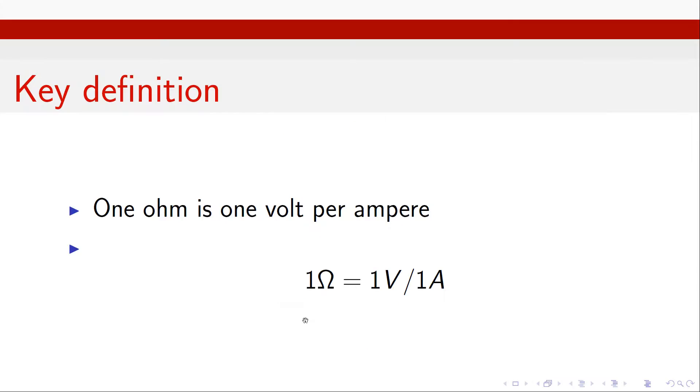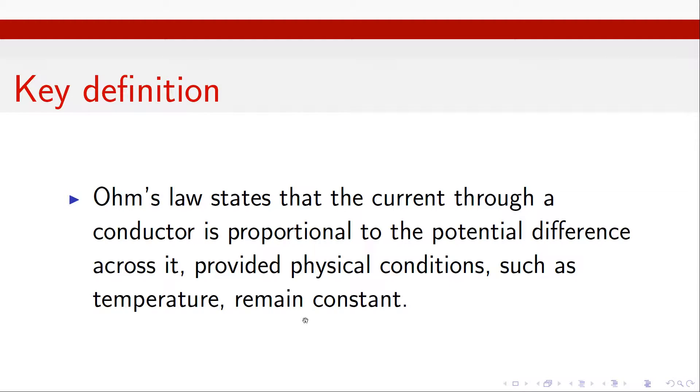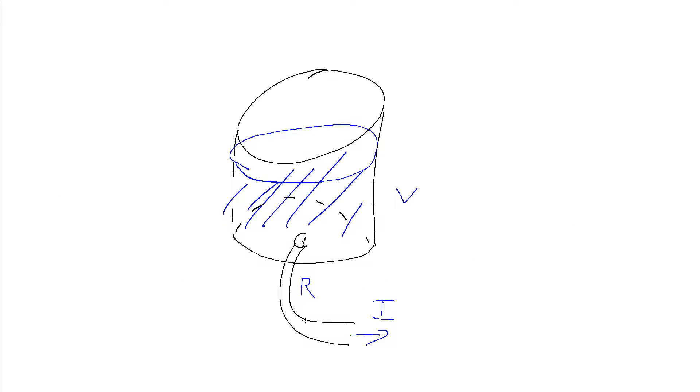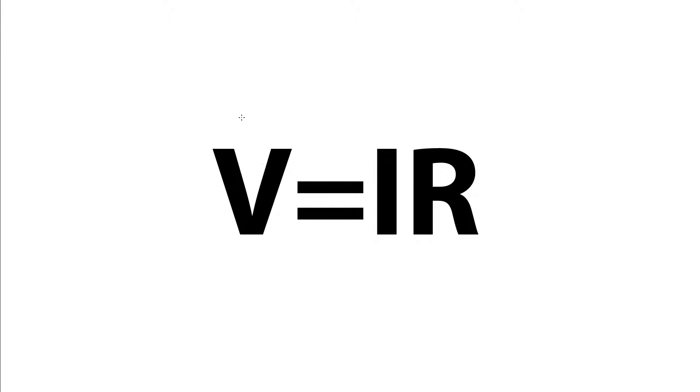And so this leads us on to Ohm's law, which is what links these. So Ohm's law states that the current through a conductor is proportional to the potential difference across it, provided physical conditions such as temperatures remain constant. And this leads us to an equation which looks like this. So this here is the voltage, which will be measured in volts.